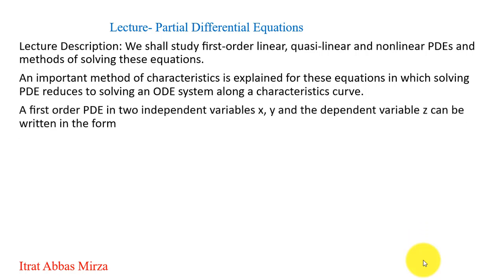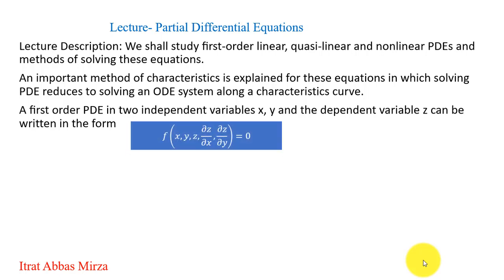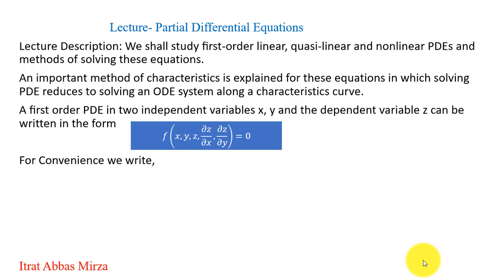A first order partial differential equation in two independent variables x and y can be written formally as a function F of x, y, z, partial z over partial x, and partial z over partial y, equal to zero. This is the symbolic representation of a first order partial differential equation mathematically. For convenience, we write partial z by partial x as p and partial z by partial y as q. This notation is used just for convenience.